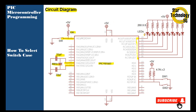Here is Port C — Port C is interfaced with 8 LEDs. We are using current sinking mode and the resistor value is 260 ohm. Here are the RD6 and RD7 pins. One switch is interfaced with RD6 and the other with RD7, and the pull-up resistor value is 4.7 kilo ohm.